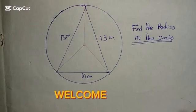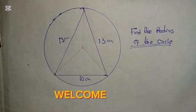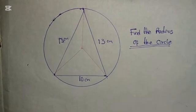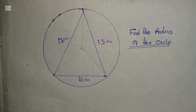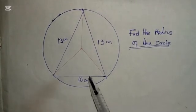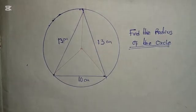Good viewers, you are welcome to today's excitement class. You are to look for the radius of the circle after an isosceles triangle was inscribed in it.